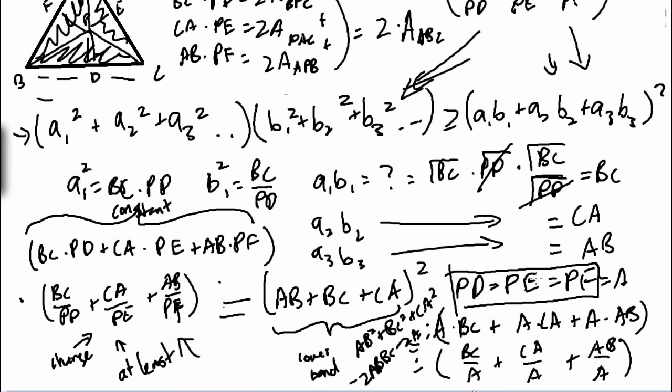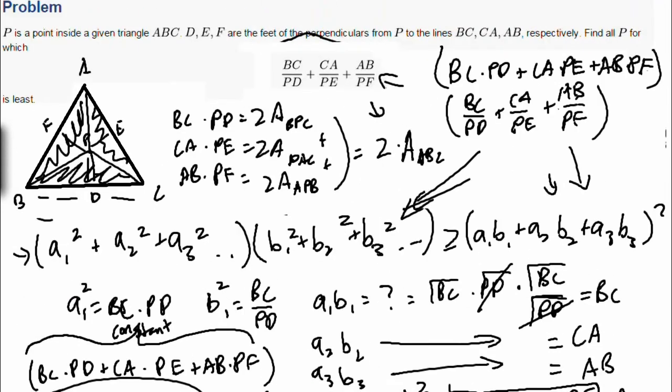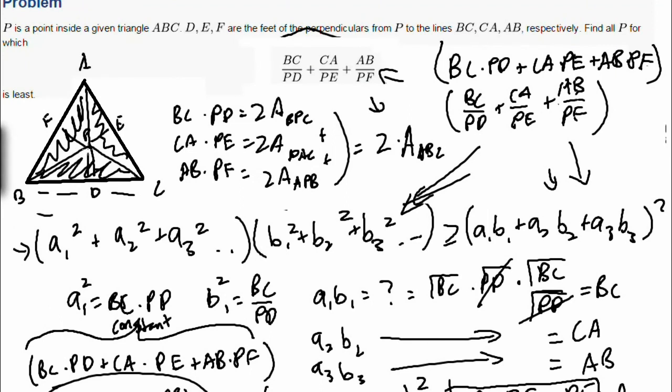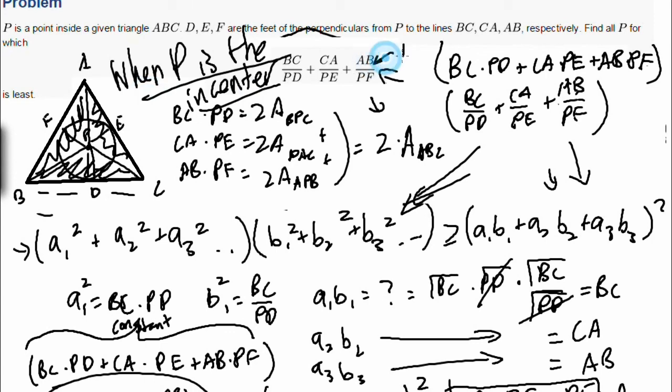When we have PD equal to PE equal to PF, and if we bash it out, we get that these two sides are equal. And, since this always has to be greater than or equal to this lower bound right here, when they're equal, this is when this value is at its least. So, what does this mean? Well, if PD, PE, and PF are equal, that means this is just the incenter. So, when P is the incenter, which means that if we drew a circle like this, P would be at the center, like inside the triangle. That's when this is the least.